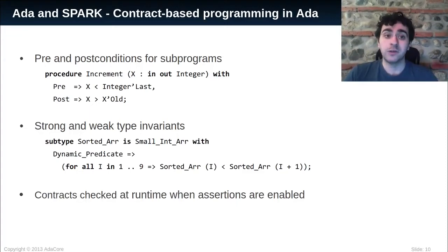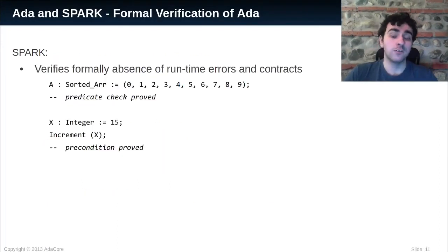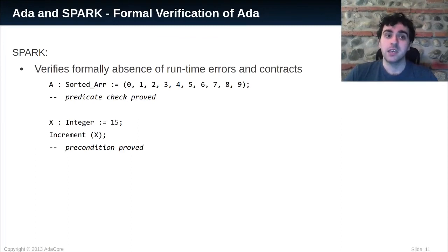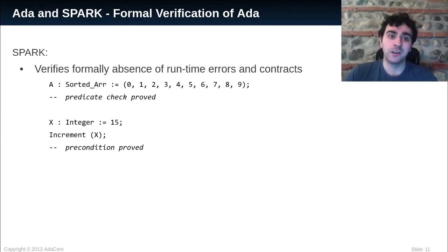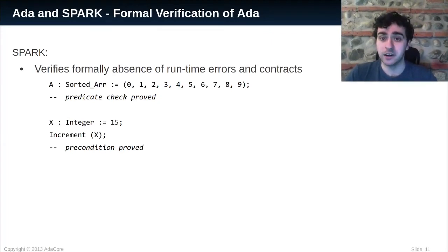The goal of Spark is to verify statically — so without running the code — that the checks usually performed at runtime will pass. It will prove the checks mandated by the Ada language, such as range checks or index checks, but will also verify the contracts, invariants, and pre- and post-conditions. If I declare a value of type SortedR, Spark will check that the predicate on SortedR holds for the given value.